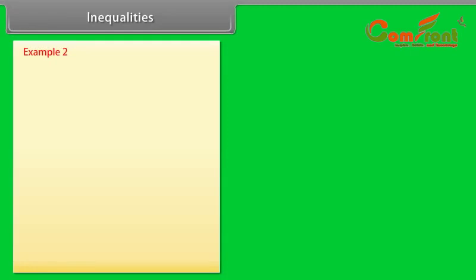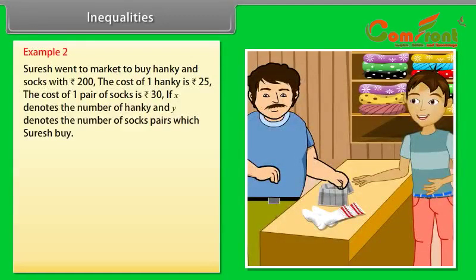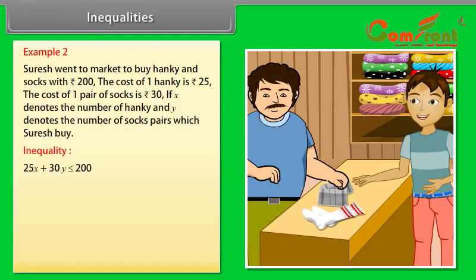Example 2: Suresh went to market to buy hanky and socks with rupees 200. The cost of one hanky is rupees 25 and the cost of one pair of socks is rupees 30. If x denotes the number of socks pairs which Suresh buys, then we can represent the above statement in inequality form as 25x plus 30y less than or equal to 200. It is a linear inequality of two variables.